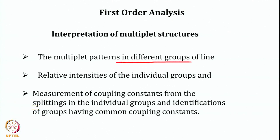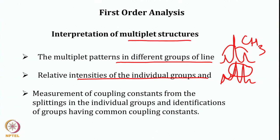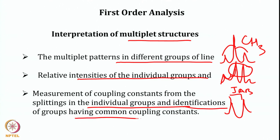All these concepts will be important in interpretation of the multiplet structure of a compound. The multiplet pattern of different groups of lines will be different and will be dictated by the relative intensity of individual groups. As we saw, CH3 gives a certain pattern and CH2 is even more complicated, splitting into 4 lines. We will look at how this splitting comes about and how the intensity changes. Measurement of coupling constant — measuring J(AB) from the splitting of an individual group — is important because it helps in identification of groups having the same coupling constant.